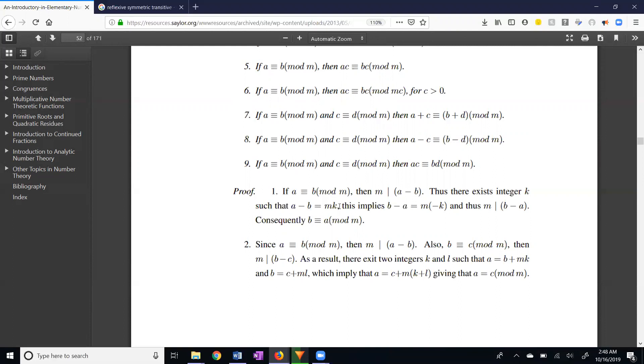Now, if we multiply both sides of this equation by negative 1, A minus B becomes B minus A, and we have M times negative K. So we have M times something equals B minus A. That means M divides B minus A, which means B is congruent to A mod M. This is using our definitions.